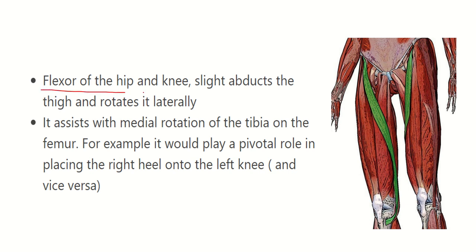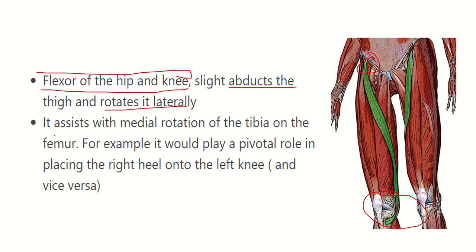The sartorius is a flexor of both the hip and knee joint — causing flexion at both joints. It also slightly abducts the thigh and rotates it laterally, and it assists with medial rotation of the tibia on the femur. For example, it plays a role in placing the right heel on the left knee.